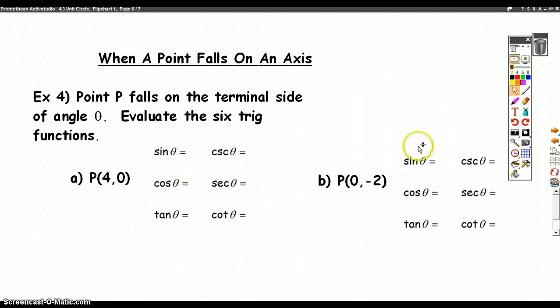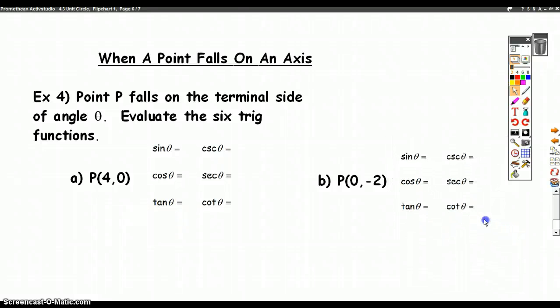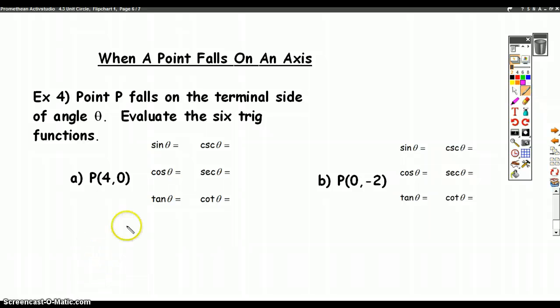We're going to look at a special case. We've done problems like this before: point P falls on the terminal side of angle theta, evaluate the six trig functions. I've got our six trig functions here, and really the same thing we did in the other videos, but watch - there's something slightly odd about these problems.